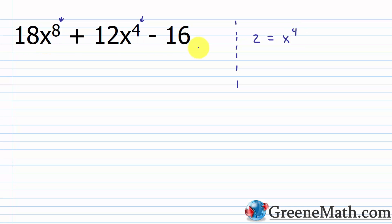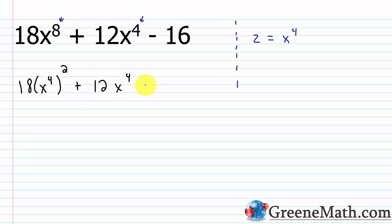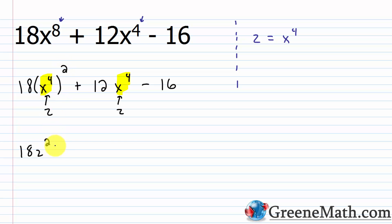I'm going to rewrite this to make it crystal clear. I have 18 times (x to the fourth power) squared, because x to the fourth power squared is x to the eighth power. Then plus 12x to the fourth power, then minus 16. Everywhere I see x to the fourth power, I can replace that with z, since z equals x to the fourth power. So I would have 18z squared plus 12z minus 16.